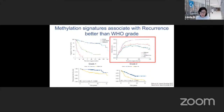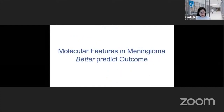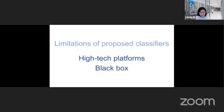Several groups have attempted to address this by looking at genome-wide signatures. One example is the beautiful work by the Heidelberg group using methylation signatures. In the top right corner, a prior prediction curve shows that the lower the curve, the more accurate the prediction of recurrence. The comparison between the WHO classification system in red versus methylation classification systems in blue and green shows that genome-wide classification improves prediction of outcome. The challenge is that these are fairly high-tech platforms, not universally accessible, and rely on black-box algorithms requiring proprietary knowledge.